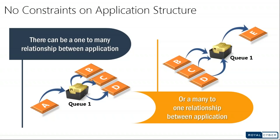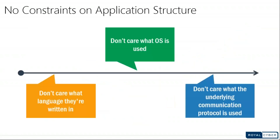There is no constraint on how many applications can connect to a queue — any number of applications can connect and receive messages from the queue. There are also no constraints on the application structure, and MQ can be installed on any operating system like Windows, Unix platforms like Linux, Solaris, AIX, and mainframes as well.